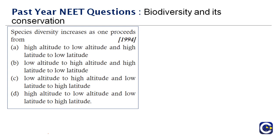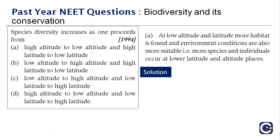Next question: species diversity increases as one proceeds from blank. At low altitude and low latitude, more habitat is found and environmental conditions are more suitable, so most species and individuals occur there. Species diversity increases from high altitude to low altitude, and from high latitude to low latitude. Therefore, the right answer is option A.